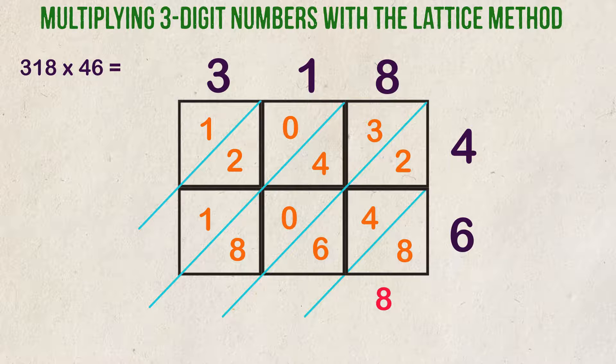The next section of numbers in the diagonal are six plus four plus two, which equals 12. We place the two down here and carry the one to the next section. The next section has eight plus zero plus four plus three plus the one we carried over. That answer is 16. We put down the six and carry the one to the next section.